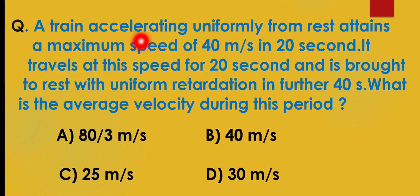A train accelerating uniformly from rest attains a maximum speed of 40 meter per second in 20 seconds. It travels at this speed for 20 seconds and is brought to rest with uniform retardation in further 40 seconds.